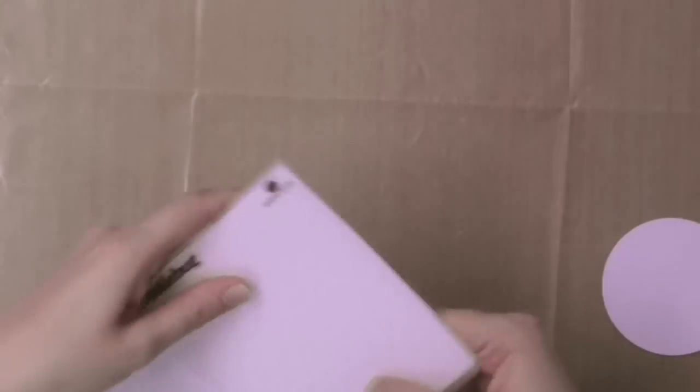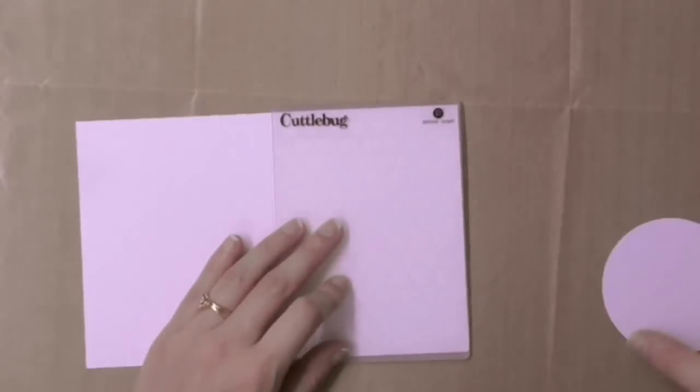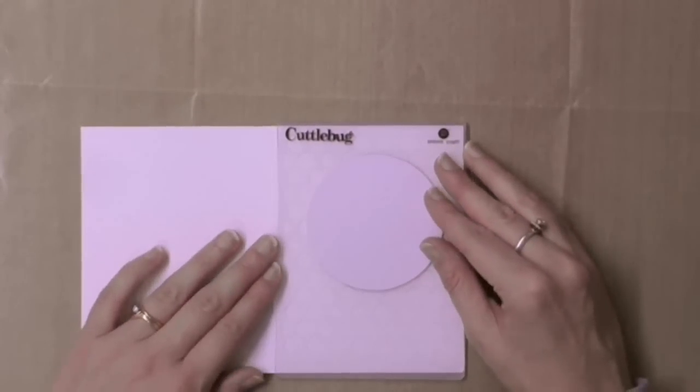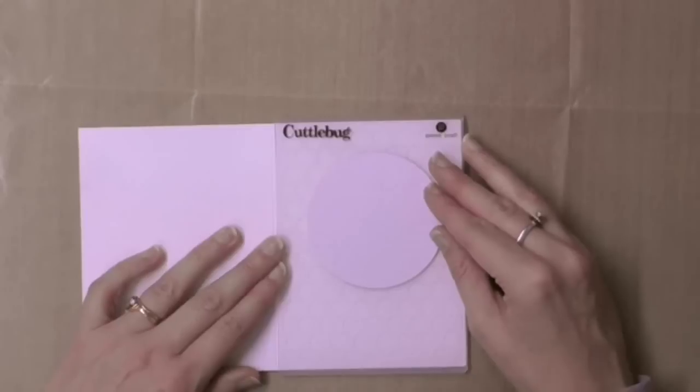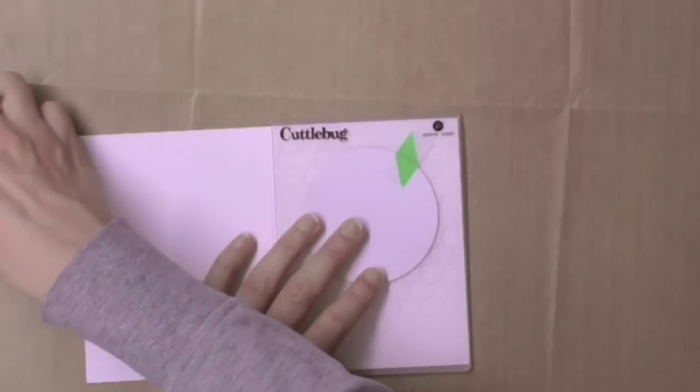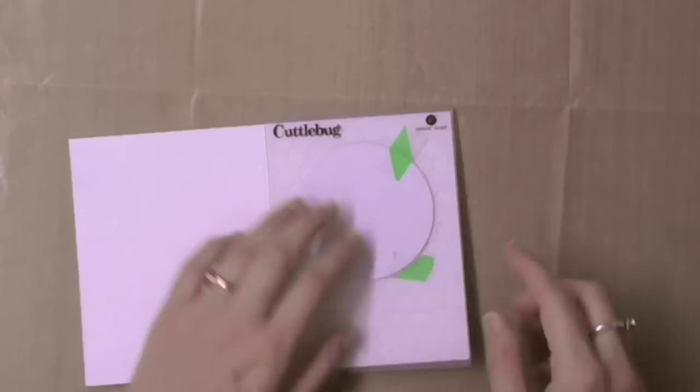So let's put the note card into the embossing folder and then I can position this exactly where I want it to go. It will emboss only in the area that the shim is in place. So let's stick this to the front of the note card with my washi tape.